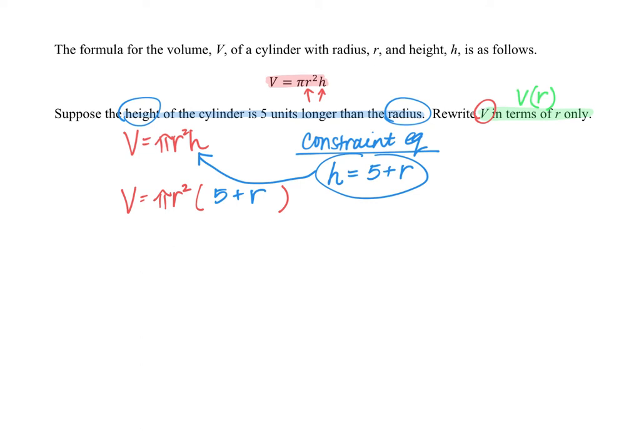So now this equation is the volume as a function of r. If your instructor required that you use function notation, you could write V of r equals π r squared times the quantity 5 plus r. If your instructor doesn't require that, then you could just write V equals π r squared times 5 plus r.